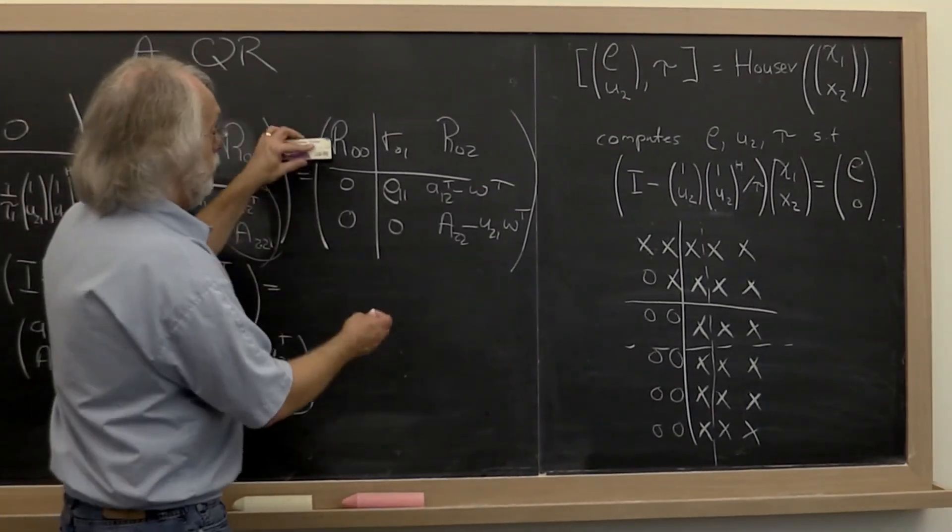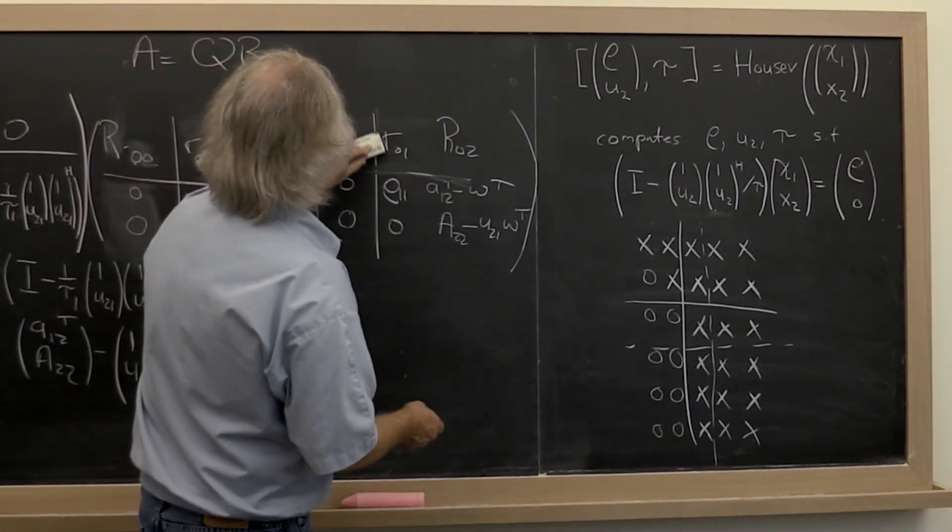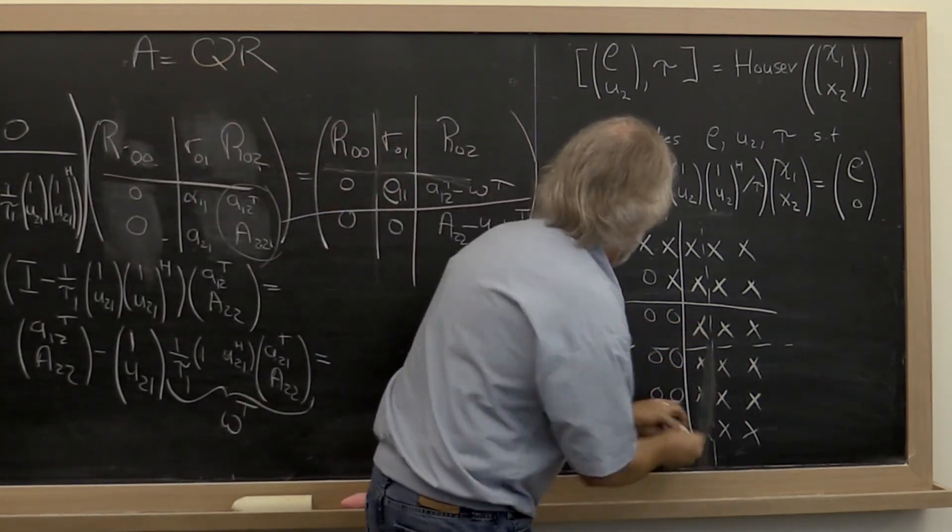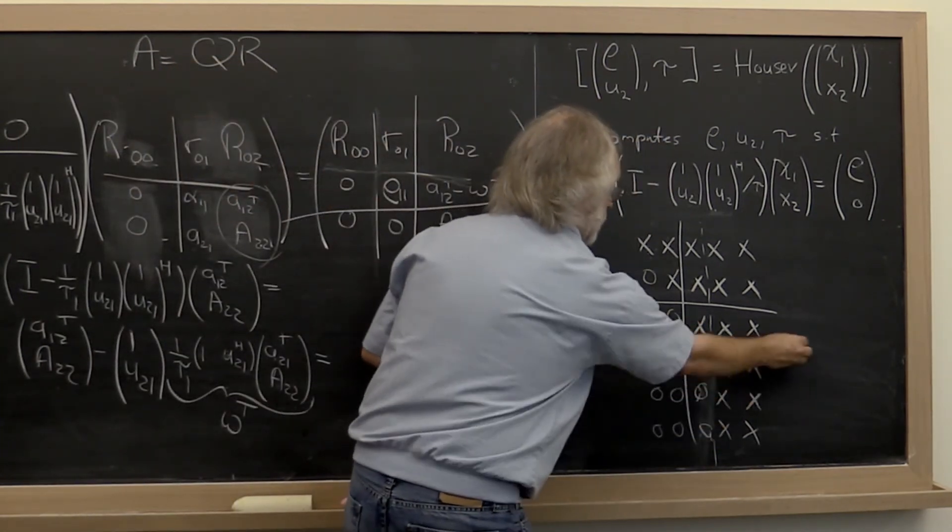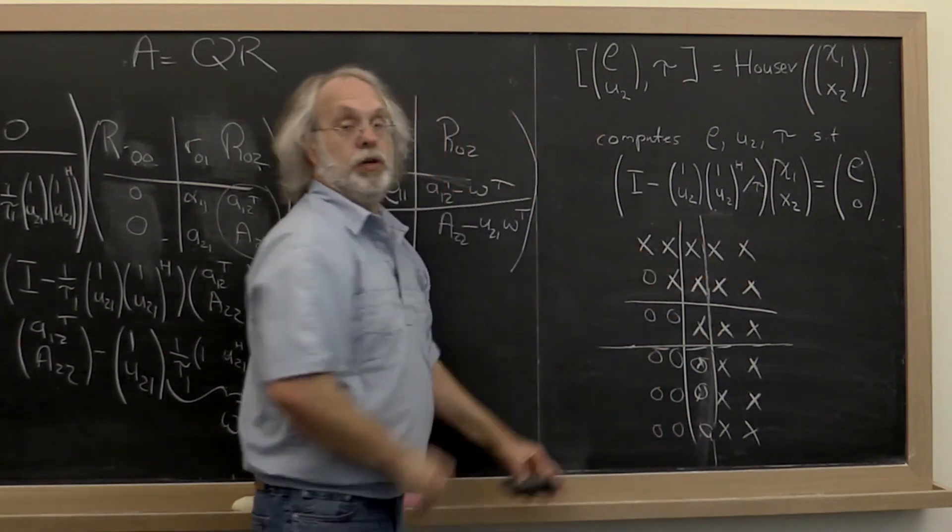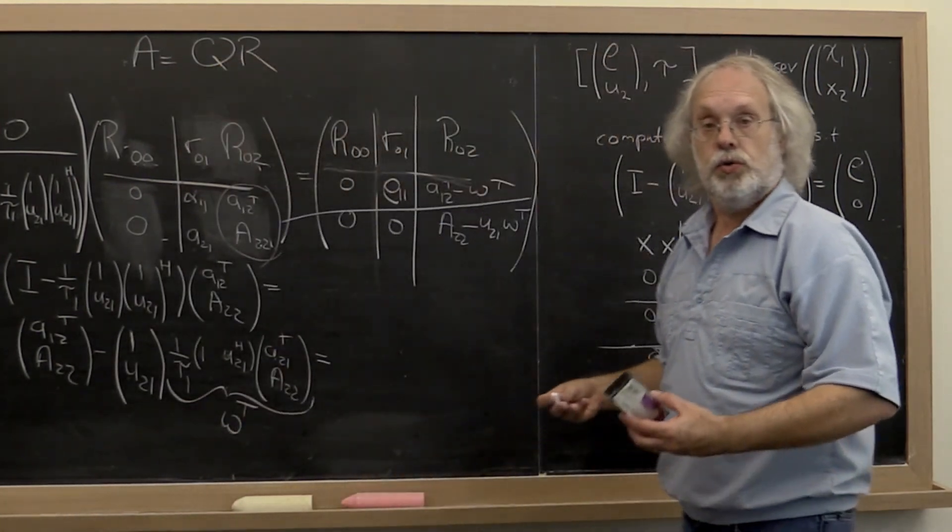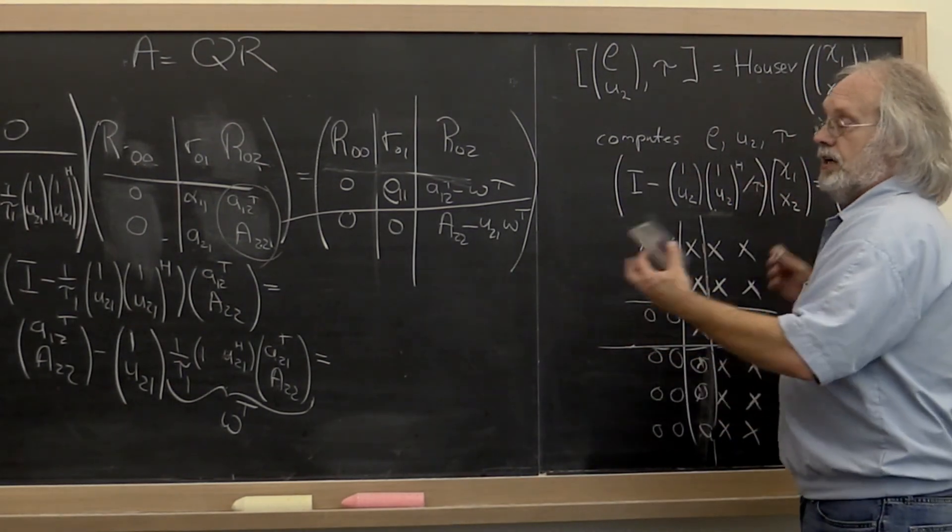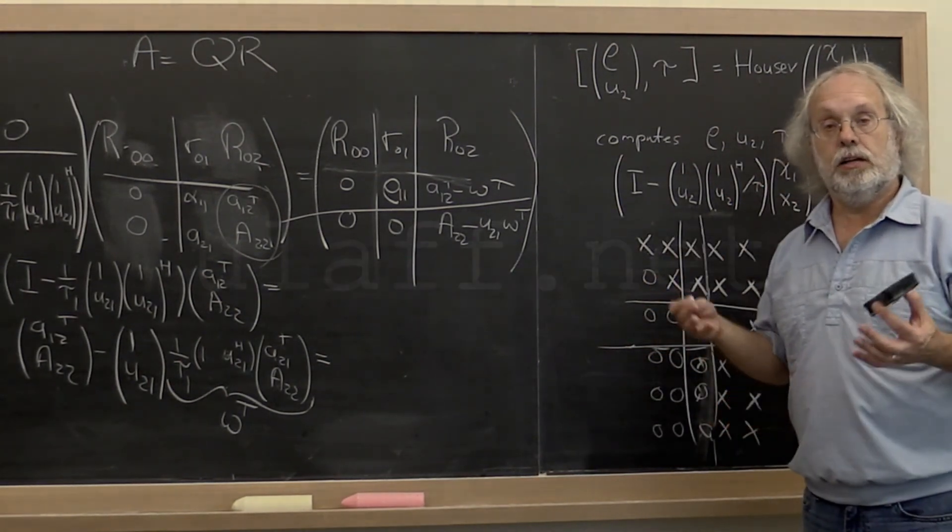And then we move forward. We now are done up to this point. We have introduced zeros right here. We move forward and we do the next iteration. So this gives you some of the details that you need to actually implement this as an algorithm.